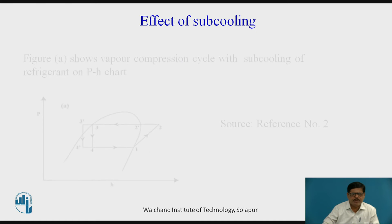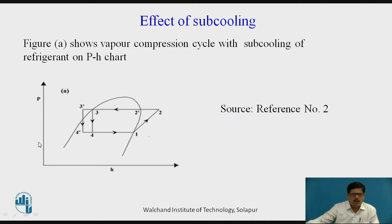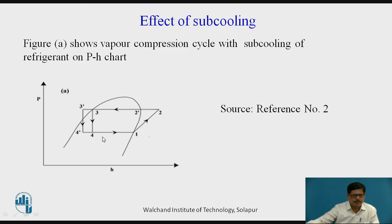Now let us see the effect of subcooling. On the PH diagram, 1, 2, 3, 4 is the simple cycle. But when you cool the refrigerant below the condensing temperature from 3 to 3 dash, then it is called subcooling. The degree of subcooling will be T3 minus T3 dash. Our expansion or throttling line shifts toward the left, and its effect will be to increase the refrigerating effect.